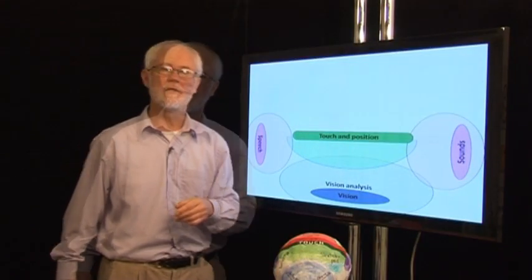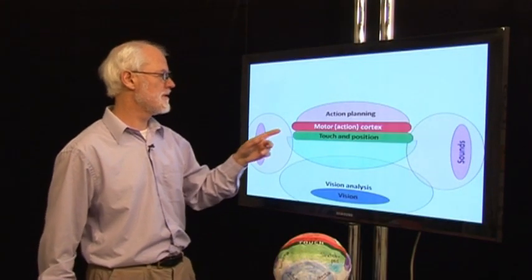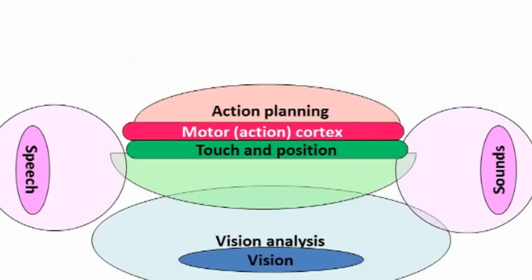We can add these two areas to the diagram. So the motor strip and action planning is just in front, and speech is formed here on the left.